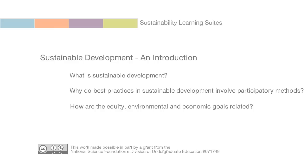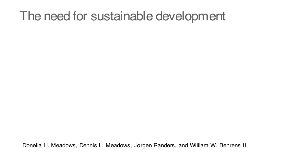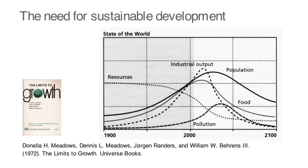The need for sustainable development came after a team of scientists from MIT used computer simulation to model the earth as a dynamic system. This was published in a book called Limits to Growth in 1972, in which they showed through their simulations that there was a real potential for a global collapse of the biological support systems on which human life relied upon, if we continued to conduct business as usual.